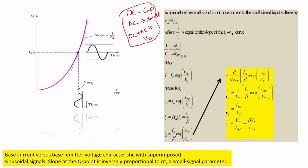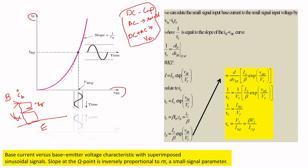We can relate the small signal input base current to the input voltage by: vbe = ib × r_pi. In the model, you have the current ib, the resistance r_pi, and the drop vbe across the base-emitter terminals. Therefore 1/r_pi is the slope — it equals the change in ib with respect to the change in vbe.